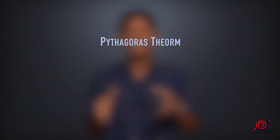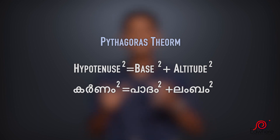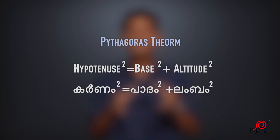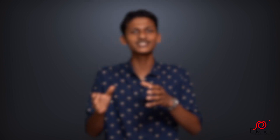Let us look at a question. We have to use the hypotenuse square equal to base square plus altitude square. That is, the hypotenuse square is equal to base square plus altitude square. We have to use the Pythagorean theorem and the ratio.